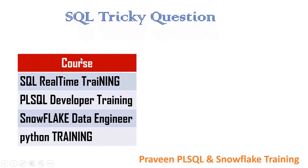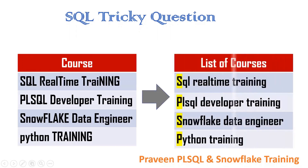This is my table. It is having one column called 'course' and it's having four records: SQL real-time training, PLSQL developer training, Snowflake data engineer, and Python training. So this is one table with four records. What is our requirement? Hope this is understood.